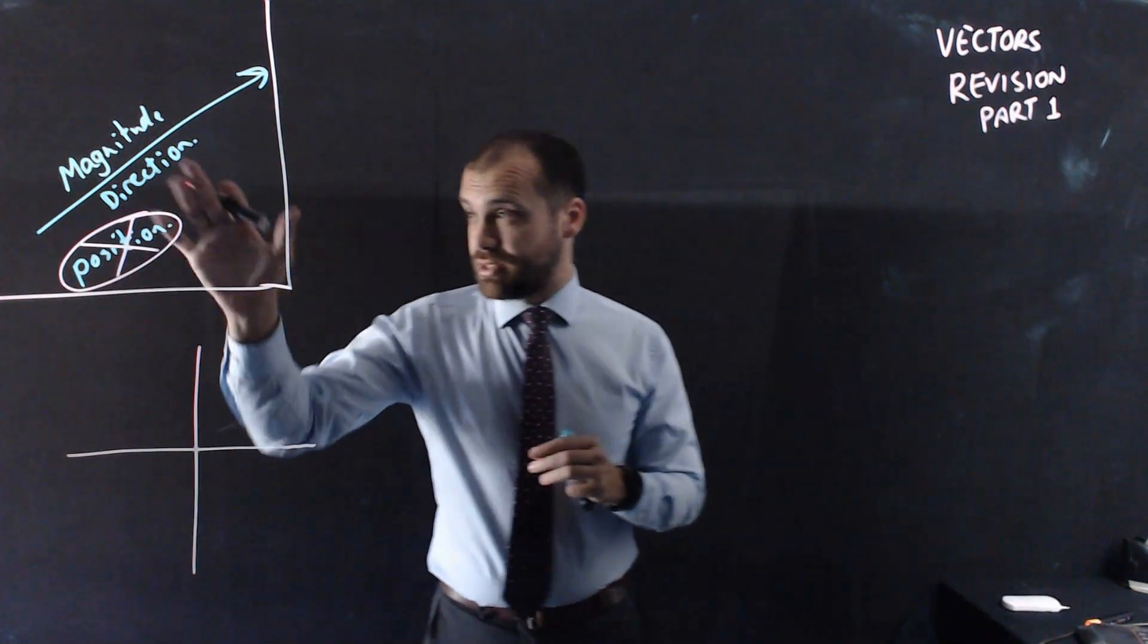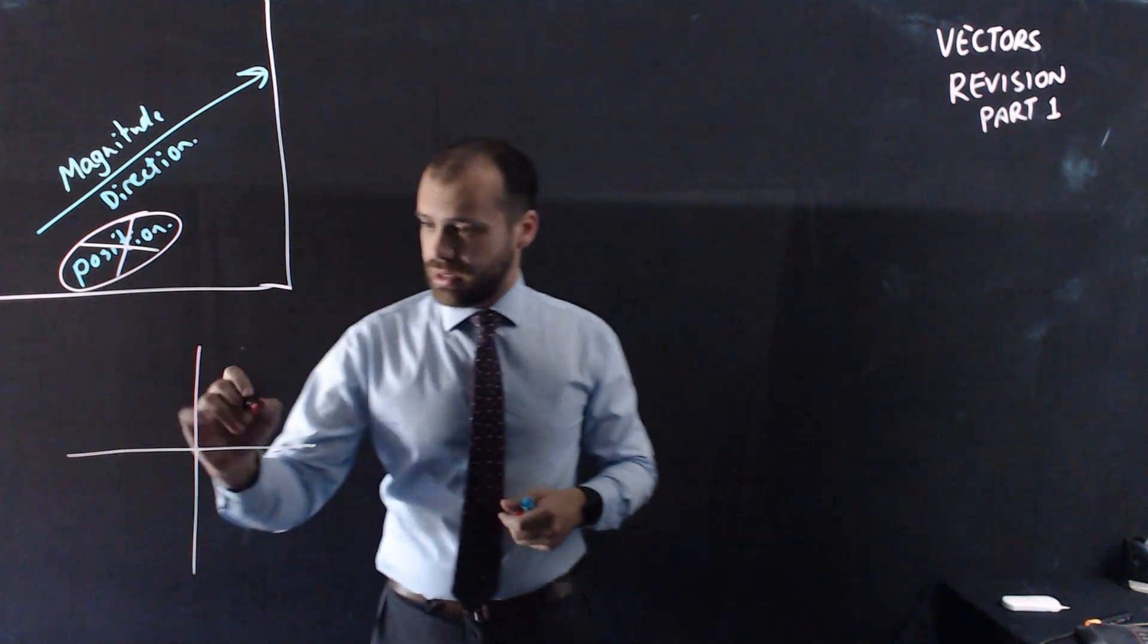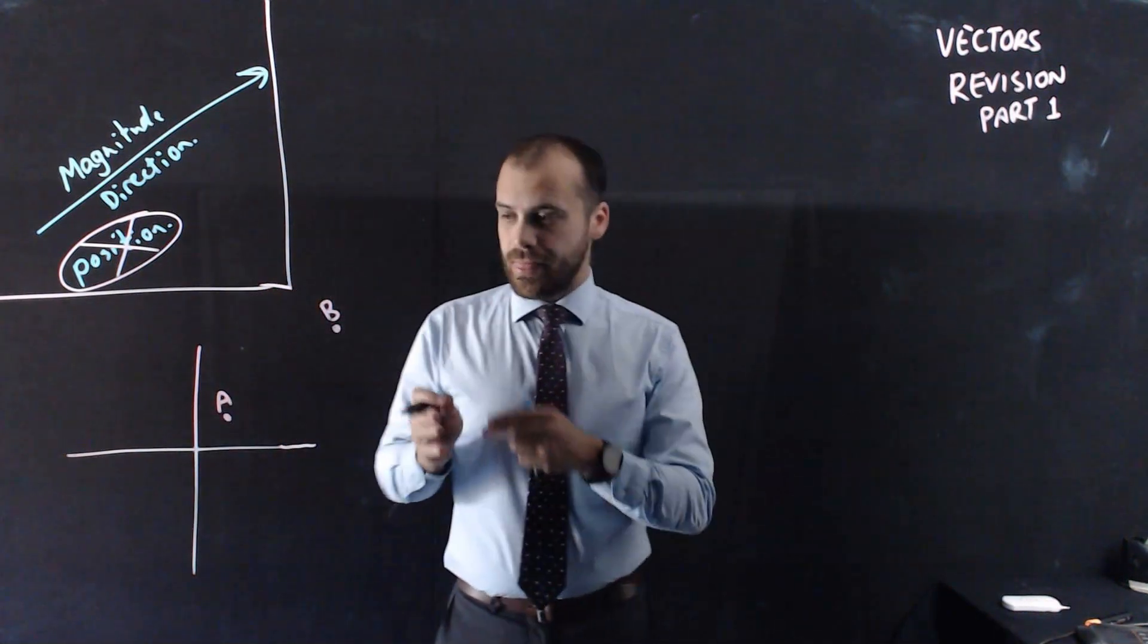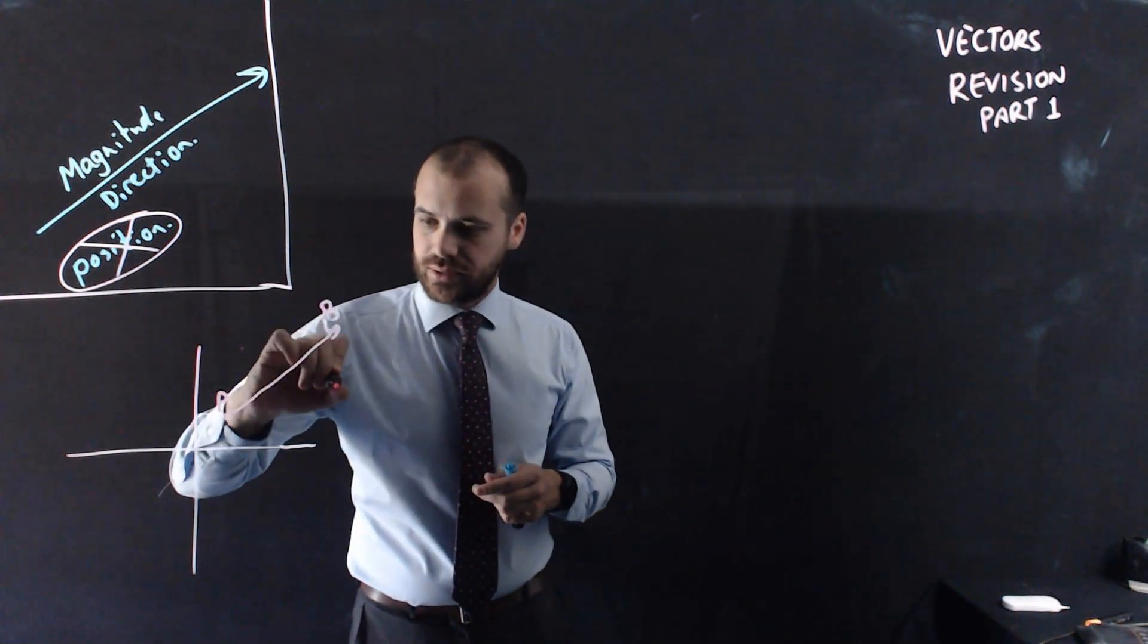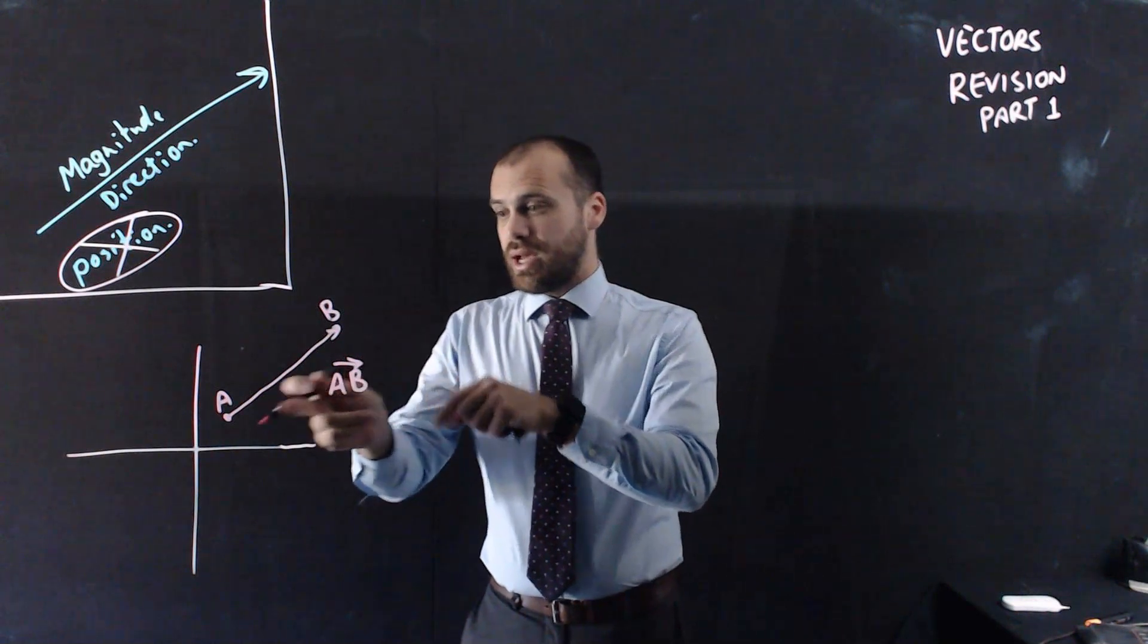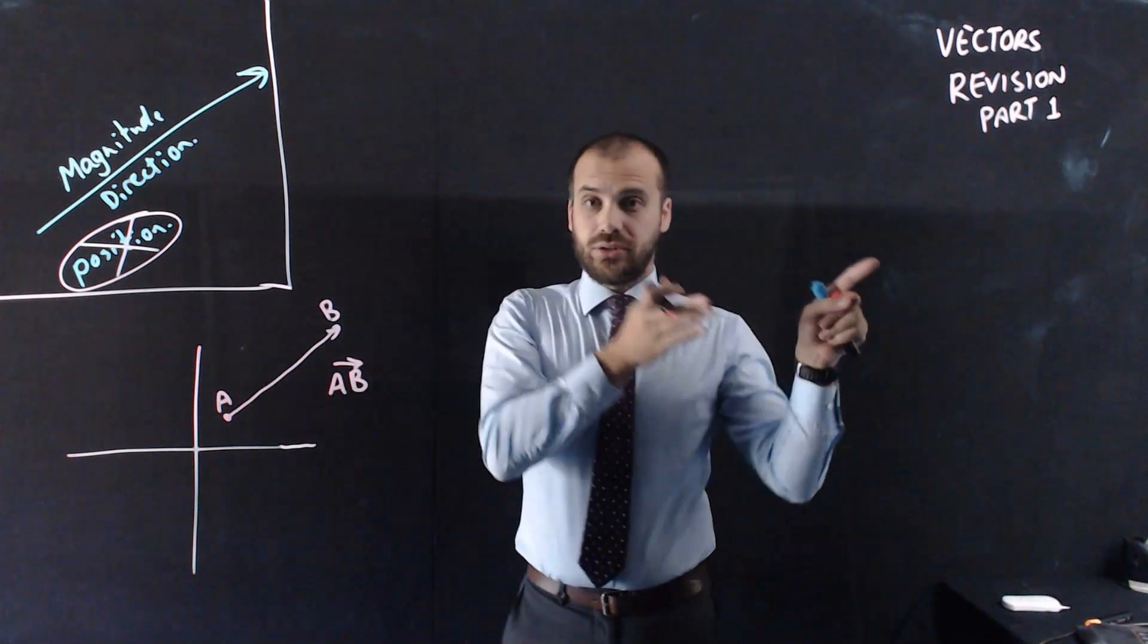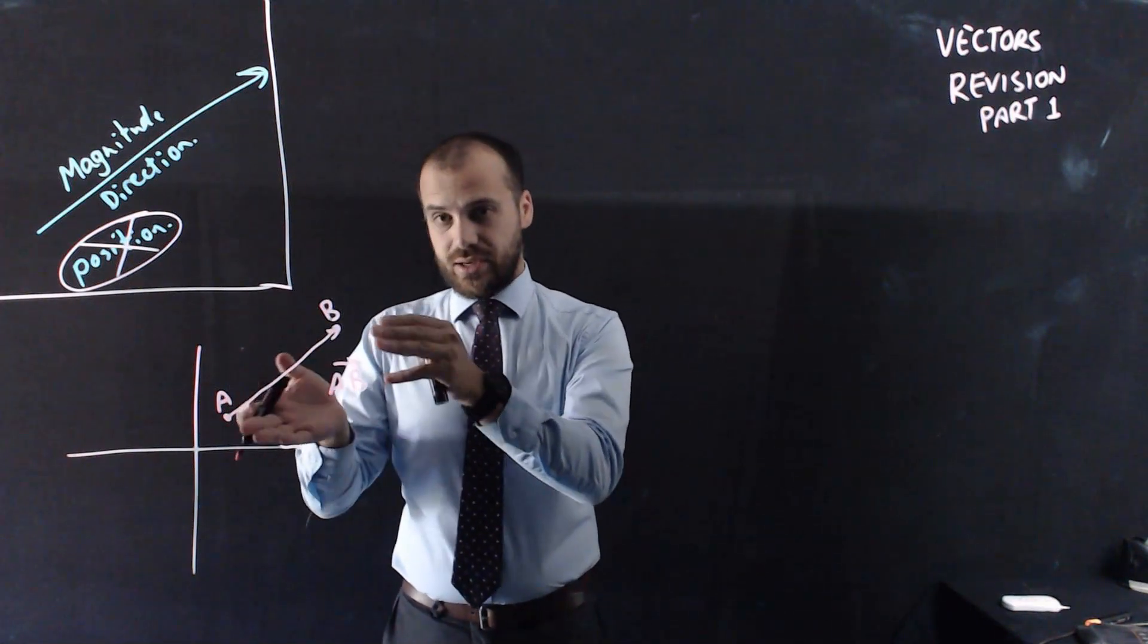Now, while it's true that a vector does not have position, you can define it using a certain position. So, what I mean by that is if I have a point here on a Cartesian plane called point A and I have another point here called point B, I can draw a line between them and call that vector AB. That vector has a magnitude, it has a direction and it has a particular position, but now, as soon as I define it as a vector I can then start shifting it around. I've defined it using AB but now that it's a vector it's not stuck there, I can shift it around.